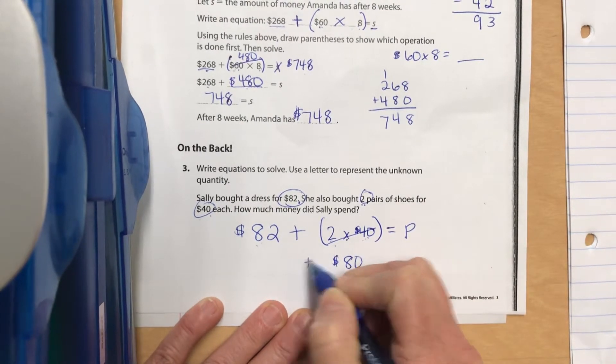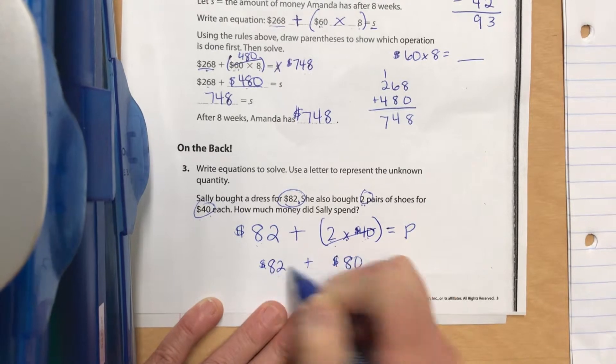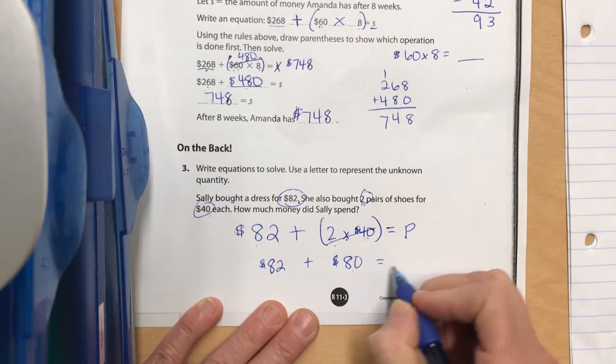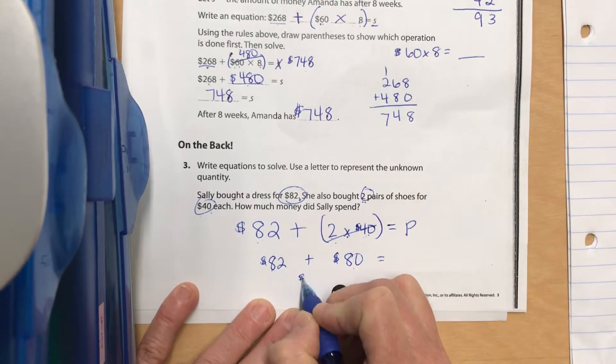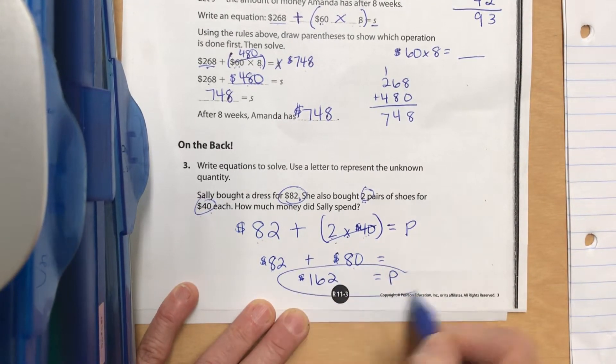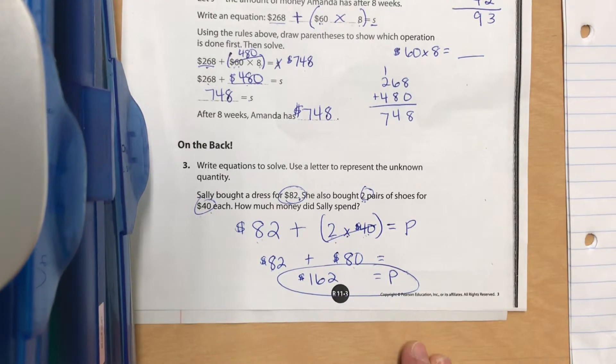This is 80 and 82. You could probably do mental math with that, and that is going to be 162 equals P, which is the answer. She spent $162. Good job, see you tomorrow.